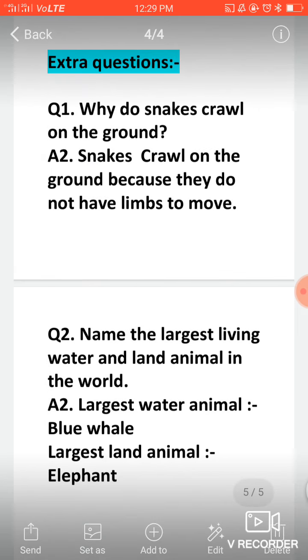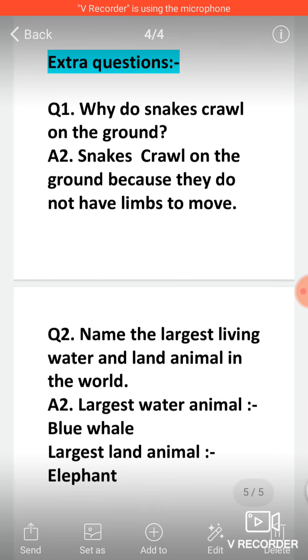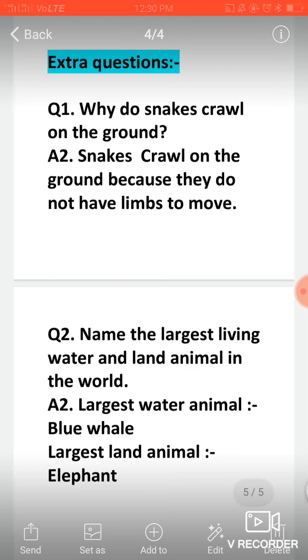Now there are two extra questions. First question, by mistake answer two is written but it is one only. Why do snakes crawl on the ground? Snakes crawl on the ground because they do not have limbs to move. Other reptiles have front limbs and back limbs but snakes do not have any limbs. That's why snakes crawl on the ground.